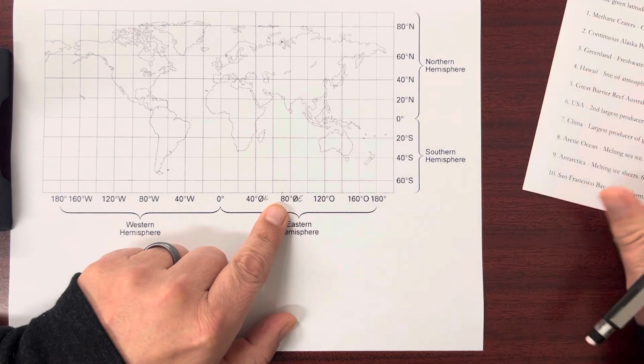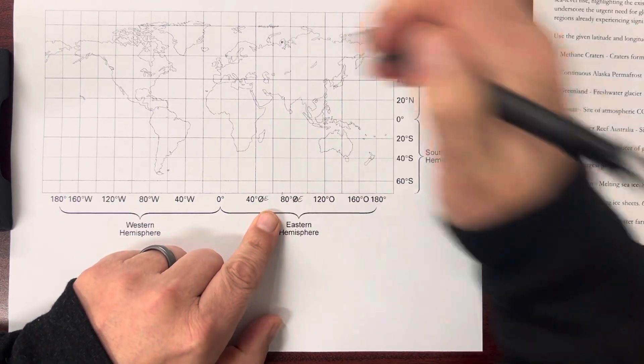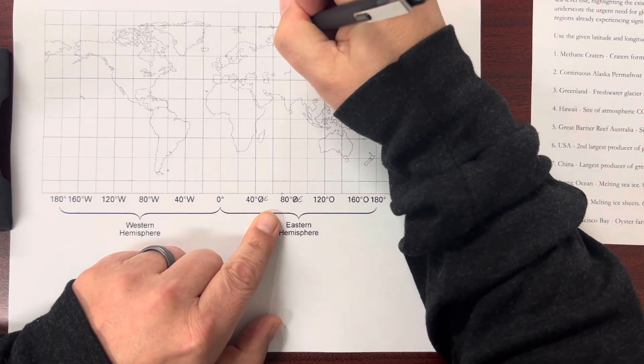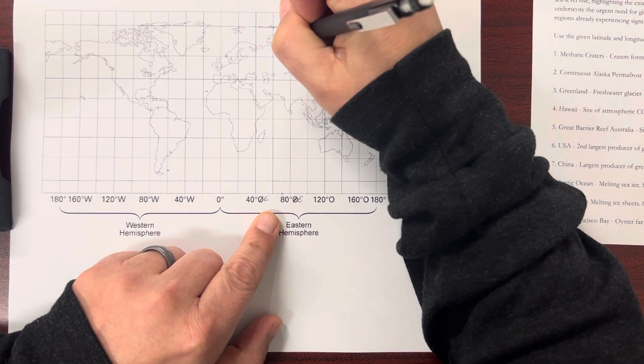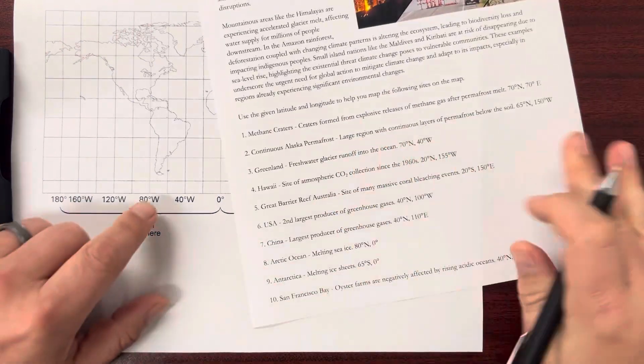So I'm going to make a big dot, and I'm going to write the title that we were given, methane craters. Now let's do one more.